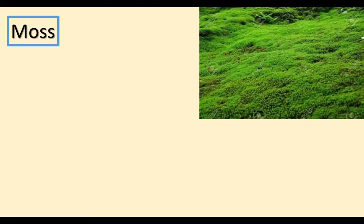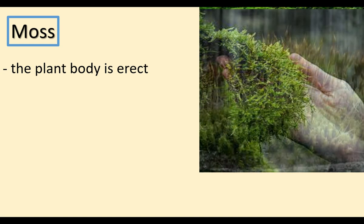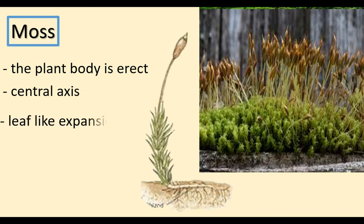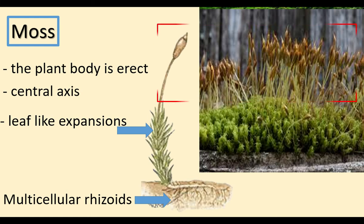Mosses are the third group of bryophytes and are the most advanced. They form a dense cover on mountain surfaces. The plant body of moss is erect, with a central axis. The central axis contains leaf-like expansions and multicellular rhizoids. The sporophyte remains attached on the gametophyte and depends on it for nutrition.